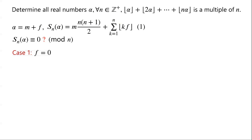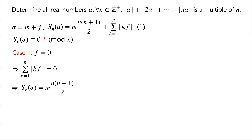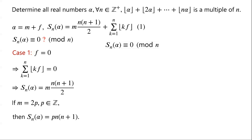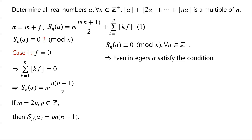Case 1: f = 0. Then the sum of floor(kf) from k=1 to n equals 0. So S_n(α) = m·n(n+1)/2. If m is an even integer, we let m = 2p where p is an integer. Then S_n(α) = p·n(n+1), and it is evident that S_n(α) is congruent to 0 modulo n for every positive integer n. Therefore, all even integers satisfy the condition.